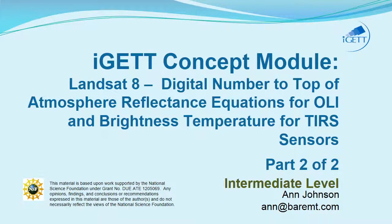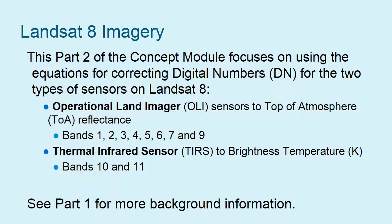Welcome. This is an IGET concept module. It deals with Landsat 8 Digital Numbers to Top of Atmosphere Reflectance Equations, both for the OLI and for the TIRS sensors. This is part two of a two-part concept module, and it focuses on the exact equations used for correcting digital numbers for the two types of sensors on Landsat 8: the Operational Land Imager sensors, the OLI sensors, and the Thermal Infrared sensors, or TIRS sensors. If you need more background information, please see part one of this concept module.